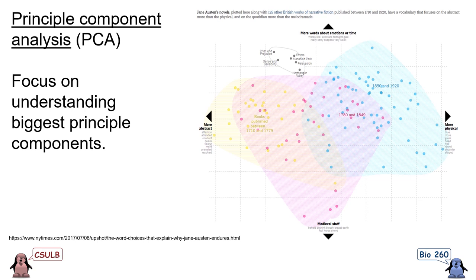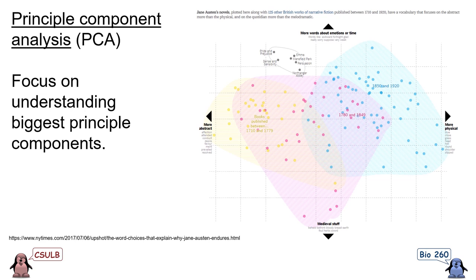Here's an example from the New York Times, where researchers used a form of principal component analysis on measurable aspects of novels published between 1710 and 1920. They identified two principal components: one representing stories that were more abstract versus more physical, and another representing stories more about emotions or time versus medieval content. Plotting novels published over time revealed a general trend over 200 years from more abstract to more physical. Most interesting was how Jane Austen's novels clustered on their own, seemingly ahead of her time — her unique combination of emotion and abstraction may explain why she remains such a notable author.